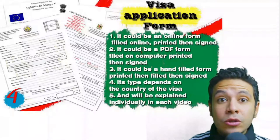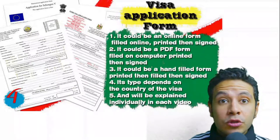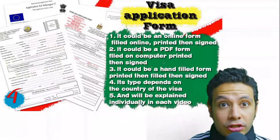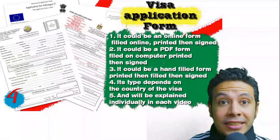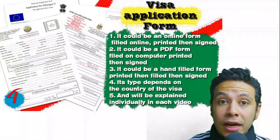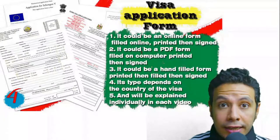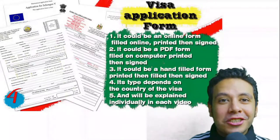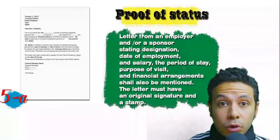For the visa application form, generally you only need one copy, but sometimes two or three copies may be required. Forms differ from country to country. Generally you should print and fill it manually, but many countries now offer their application form on an online platform where you can fill it in online, print it, and then sign it. Just fill it out as shown in this video.